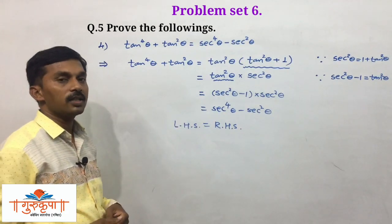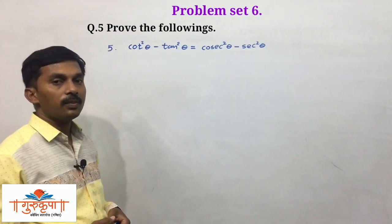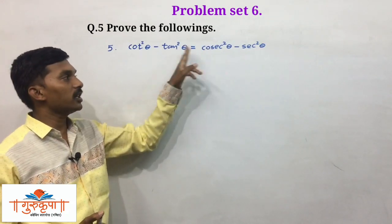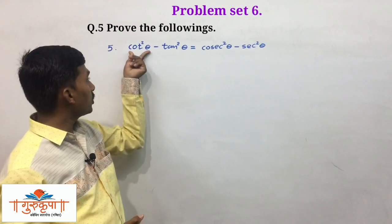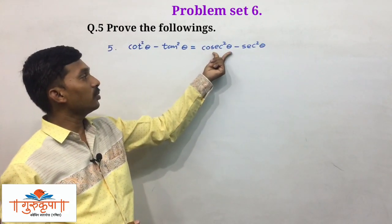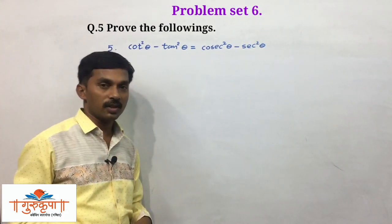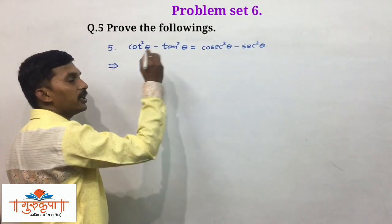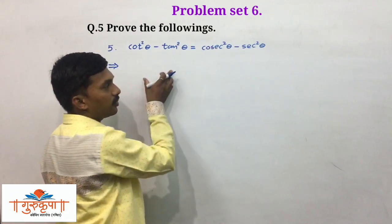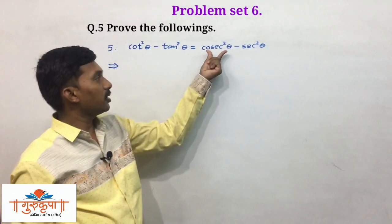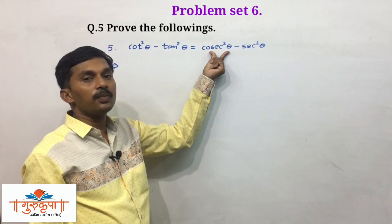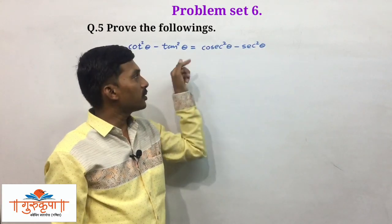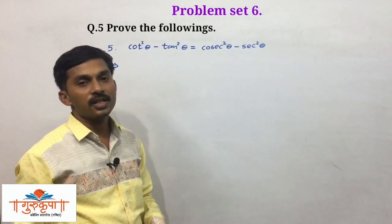We will take the next example — example number 5. The expression is: cot squared theta minus tan squared theta equals cosec squared theta minus sec squared theta. We will write RHS as it is and derive LHS from it, because it is easy. If we write 1 plus cot squared theta in place of cosec squared theta, and 1 plus tan squared theta in place of sec squared theta, then the plus 1 and minus 1 cancel, giving cot squared theta minus tan squared theta.